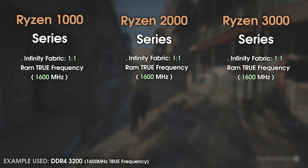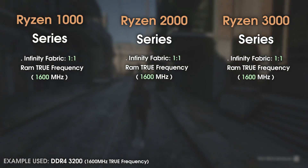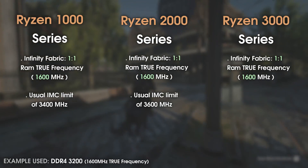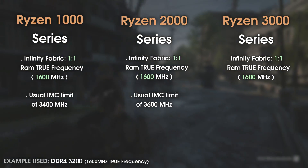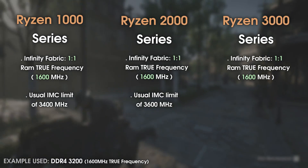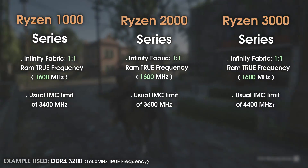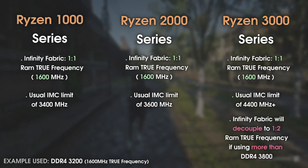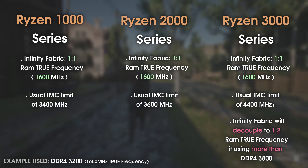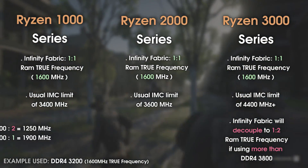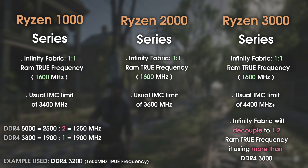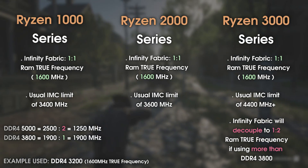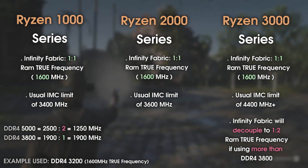Higher RAM speed is always beneficial for better Infinity Fabric speed, although first and second generation CPUs had a limit where you couldn't simply raise the frequency beyond a certain point due to the weaker IMC. Third gen brought the ability to use RAM frequencies as high as 5000MHz, but there's a catch: as soon as you go over 3800MHz, the Infinity Fabric decouples and runs at half your RAM's true frequency. So 5000MHz RAM would give an Infinity Fabric frequency of only 1250MHz instead of 2500MHz — much lower than 3800MHz.